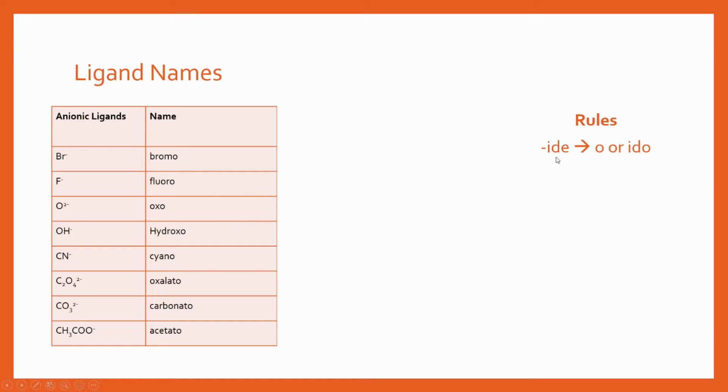So the rules are that -ide either becomes -o or -ido and these can be used interchangeably. Typically most of the time you'll see names where the -ide has become -o but also more modern texts sometimes use -ido instead. So for example this would be the bromide ion and that's becoming bromo. This would be the fluoride ion that's becoming fluoro and so on.